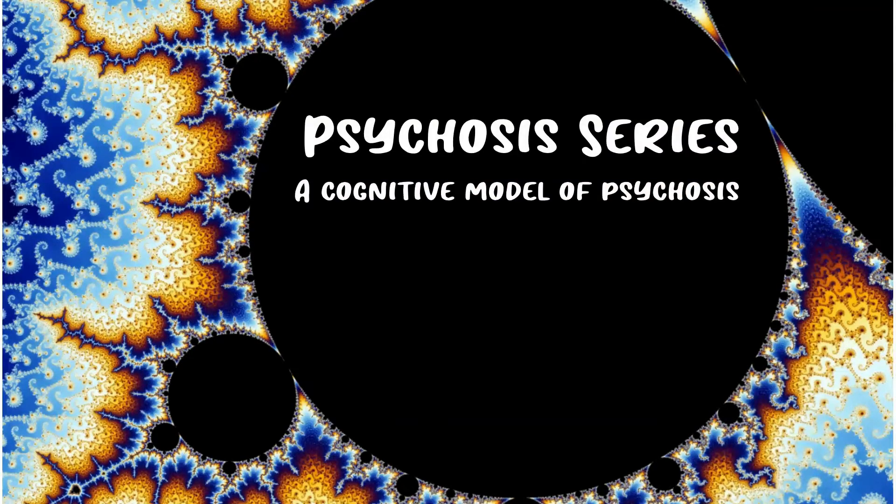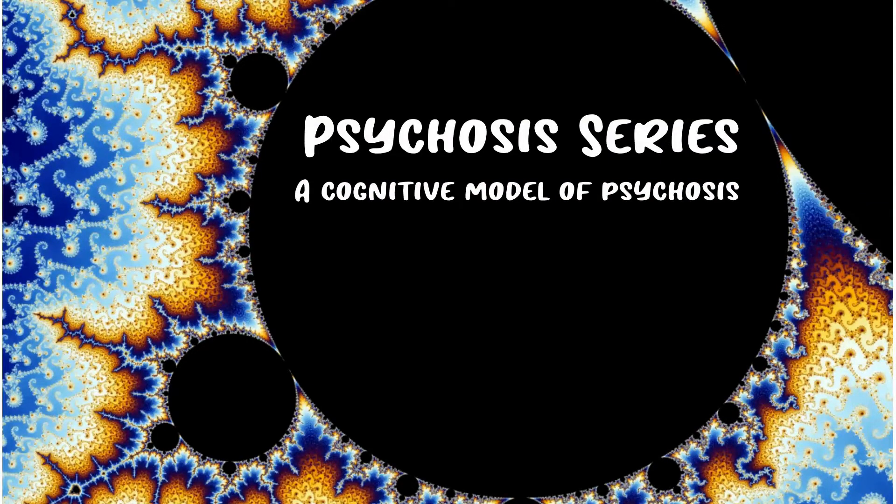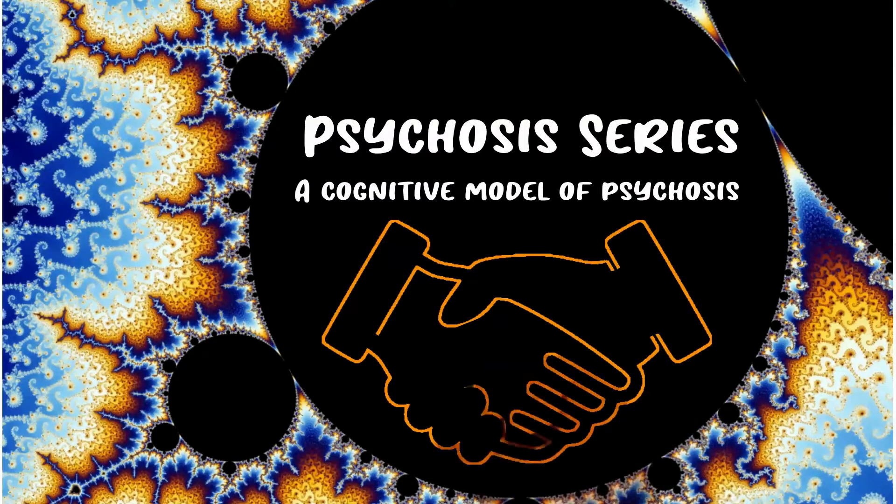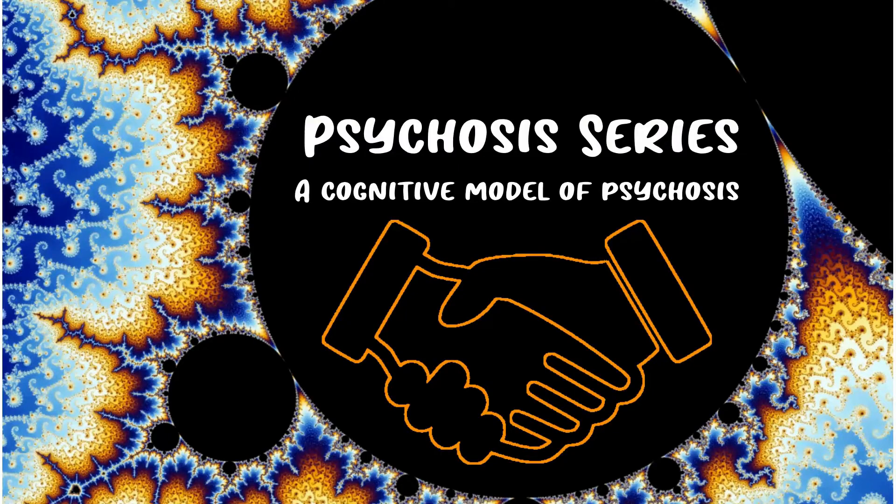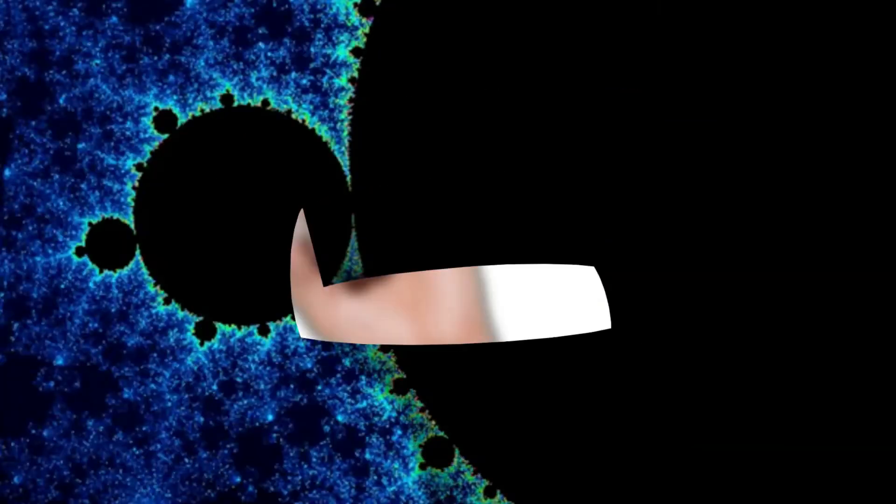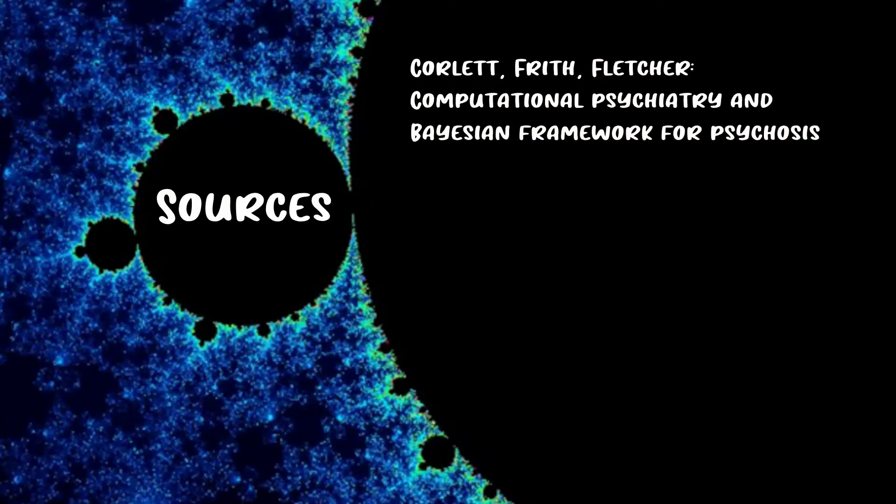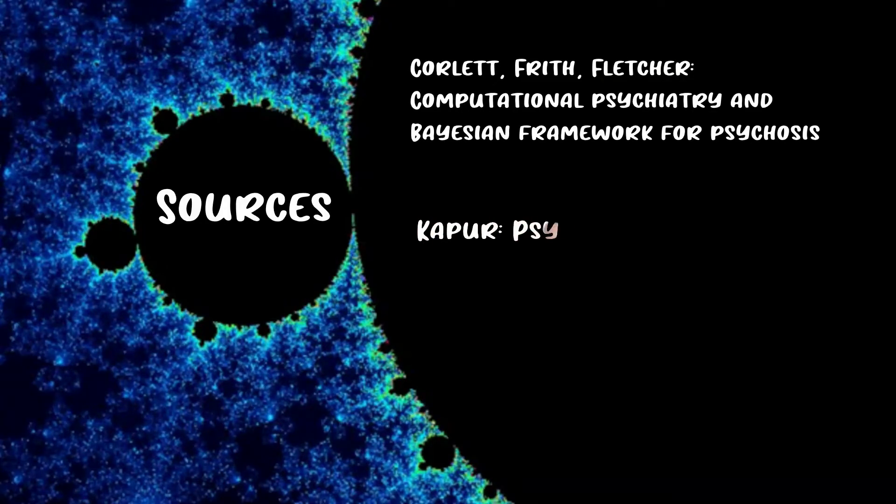I'll be presenting a cognitive model of psychosis in these videos. This model reminds me of evolution, in that behind this model or theory that is really complex, there's a deceptively simple idea that once you grasp, you understand what's going on much better and you see it everywhere you go. I'll be taking my ideas from a few sources. There are a few papers by Corlett, Frith, and Fletcher on computational psychiatry and the Bayesian framework for psychosis.